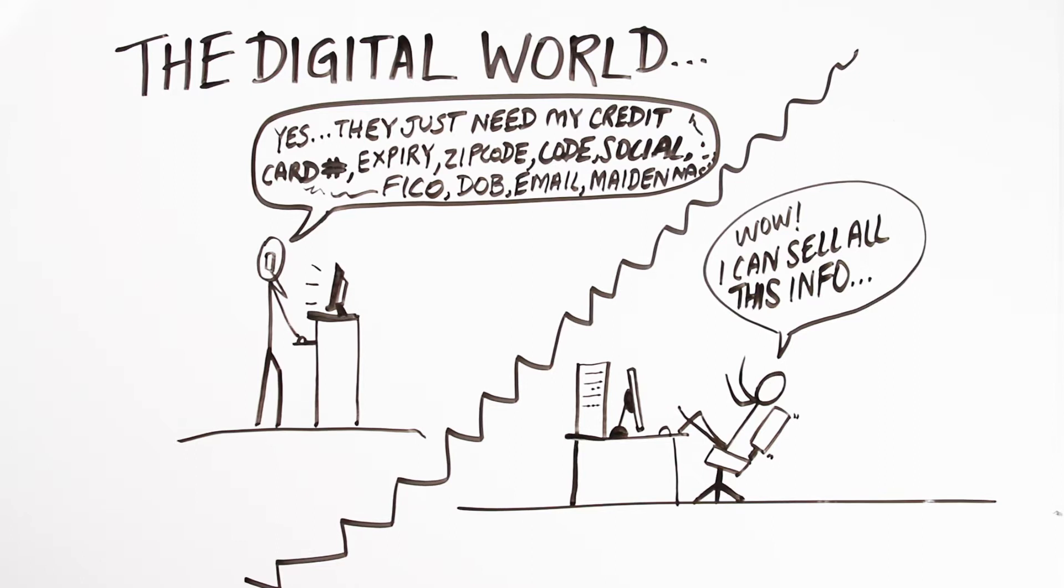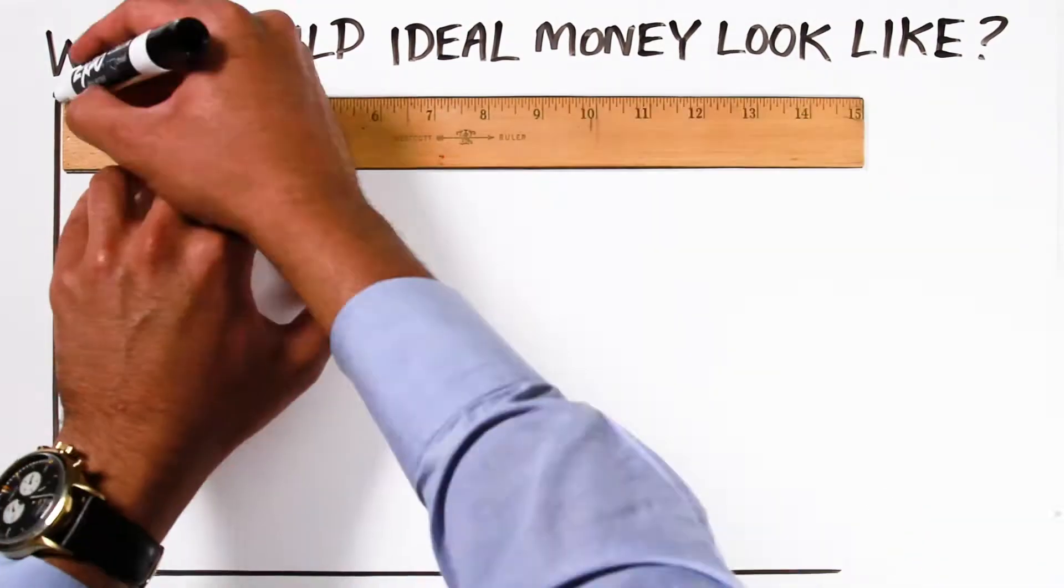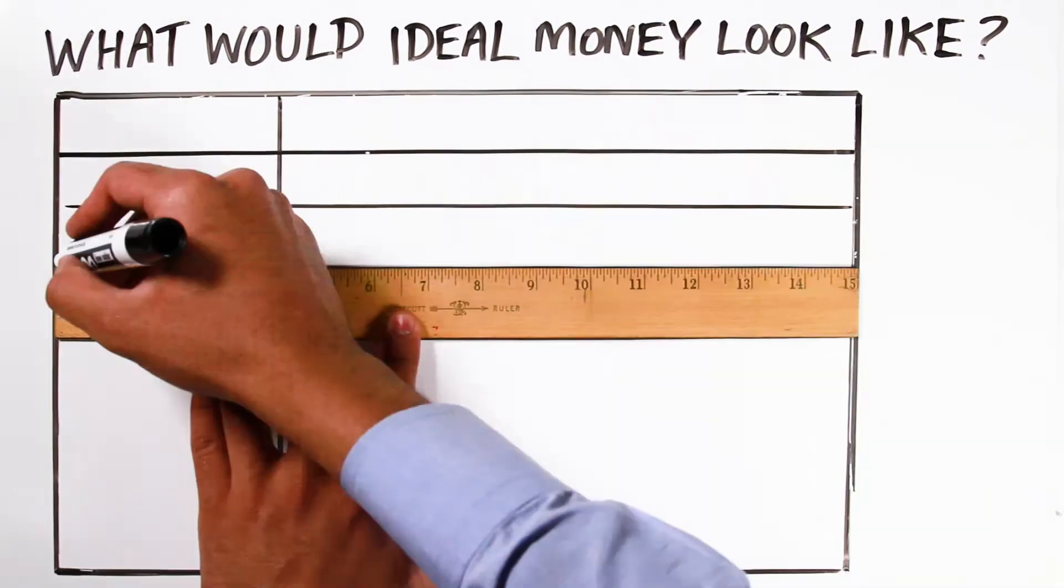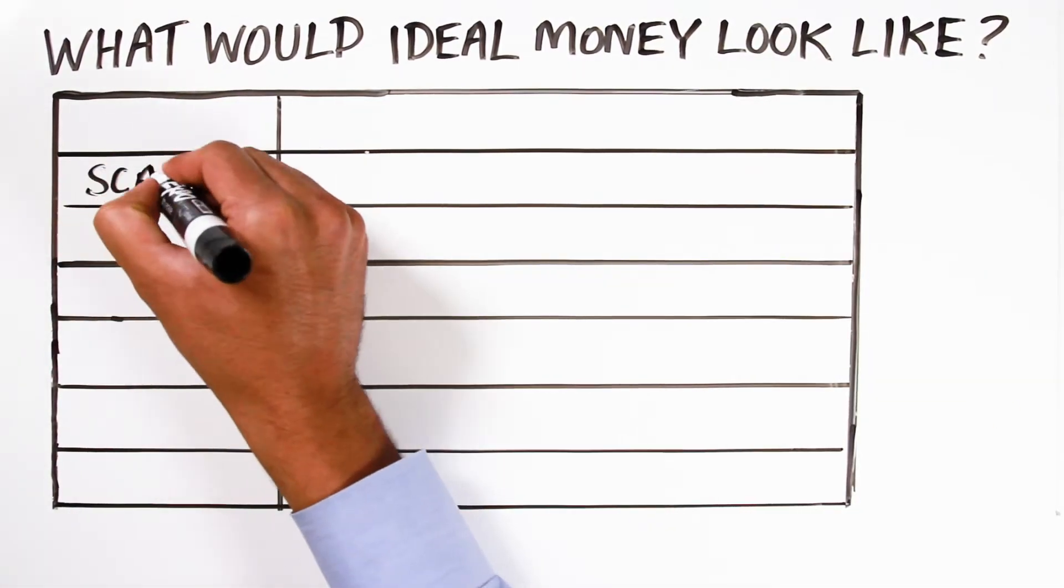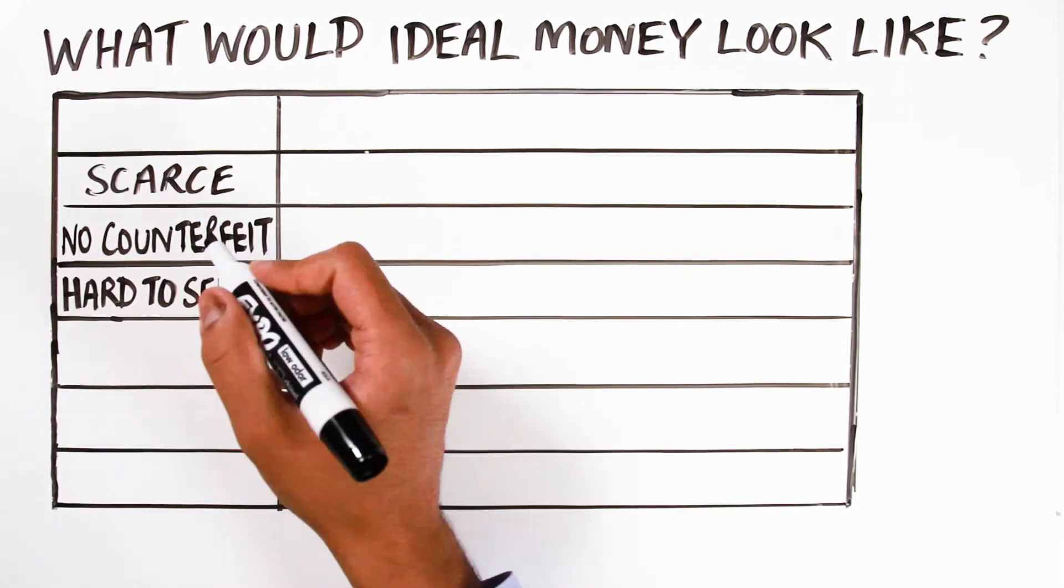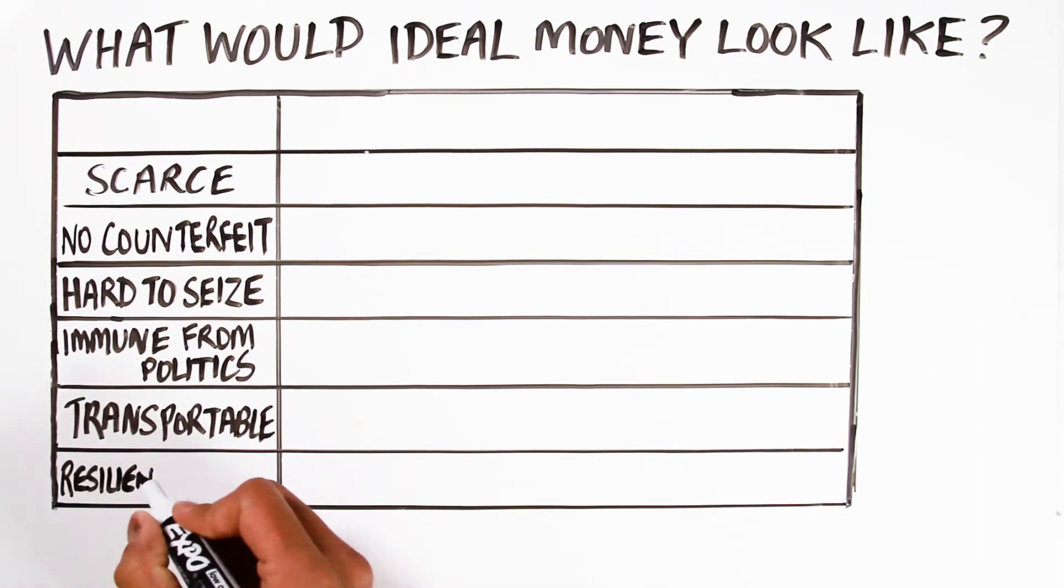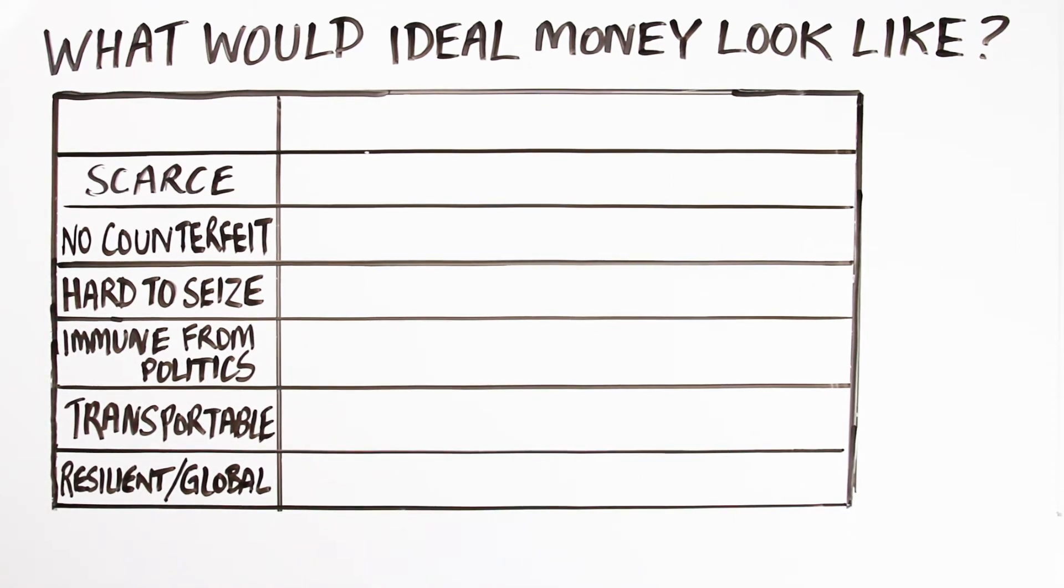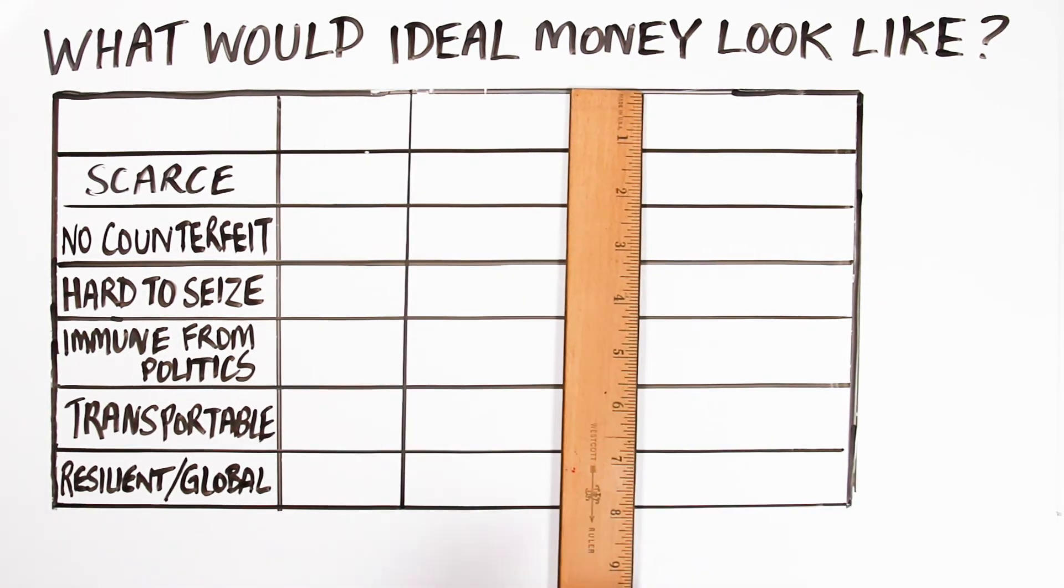So as economists, we sat down, we kicked this around. What would ideal money look like? If we were reimagining the financial system from scratch, what would be the attributes of ideal money? Well, we think you would want scarcity. Most forms of money historically needed scarcity to create value. We think the ideal form of money would be counterfeit proof, hard to seize, immune from politics, transportable, and resilient and global. And you may be surprised to see that most of the forms of money that we've had historically and currently use as money fall short on a number of these key characteristics.